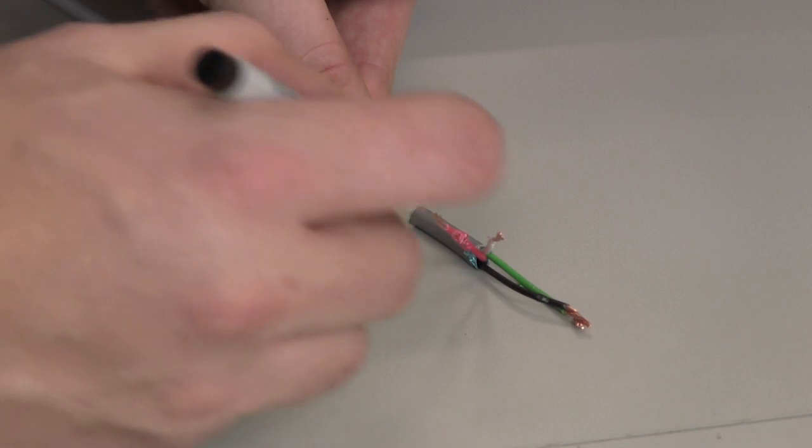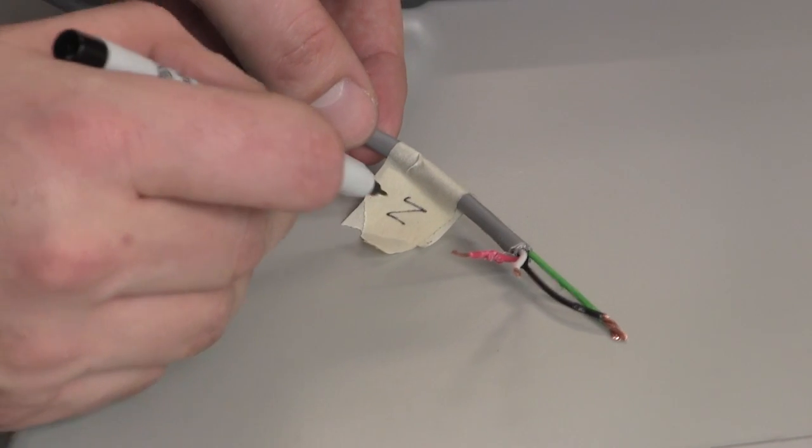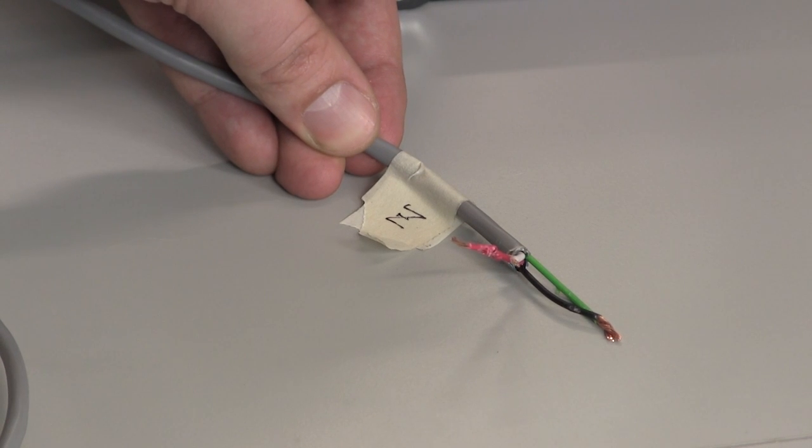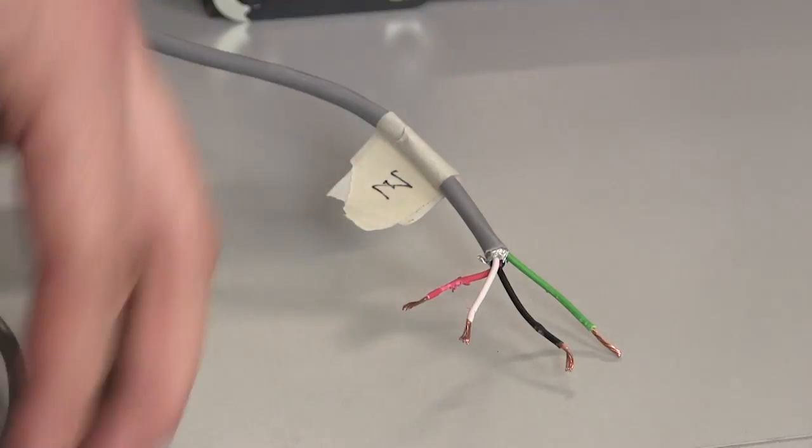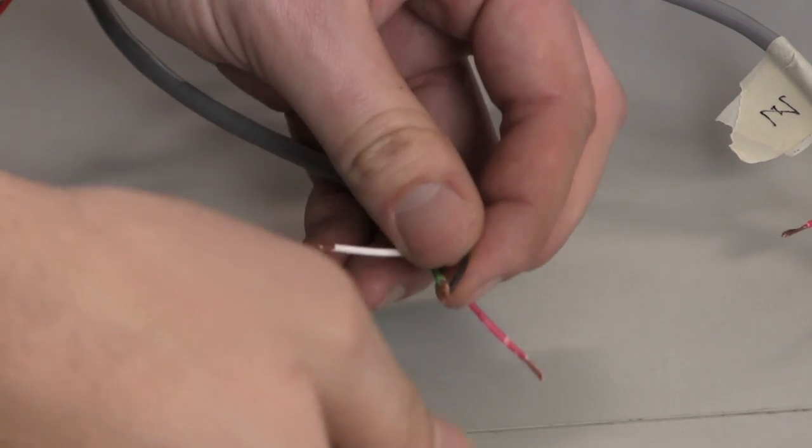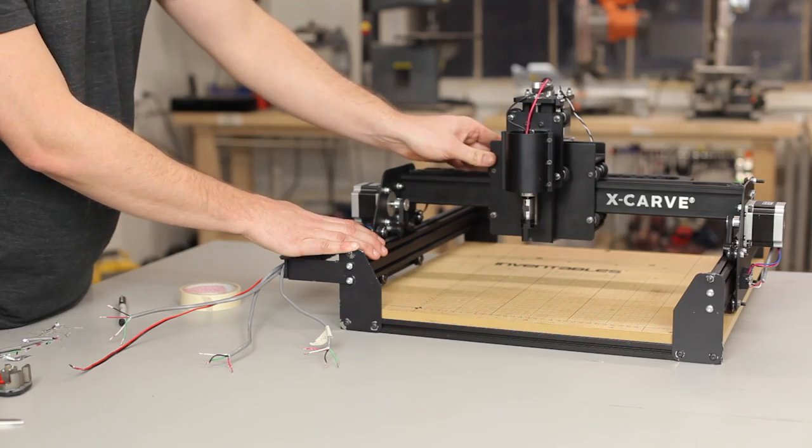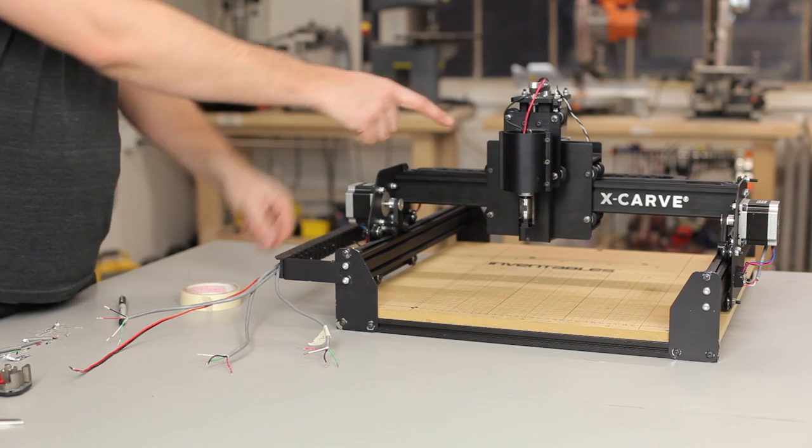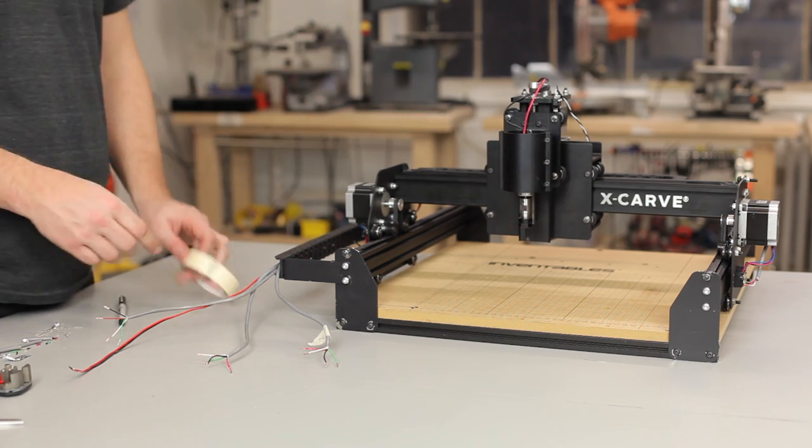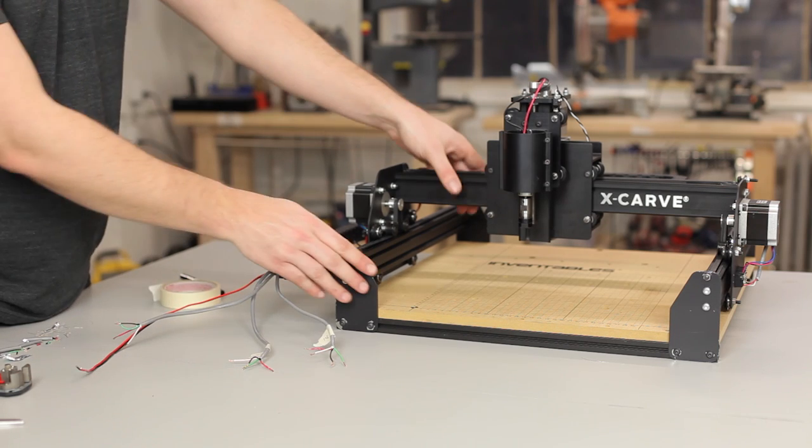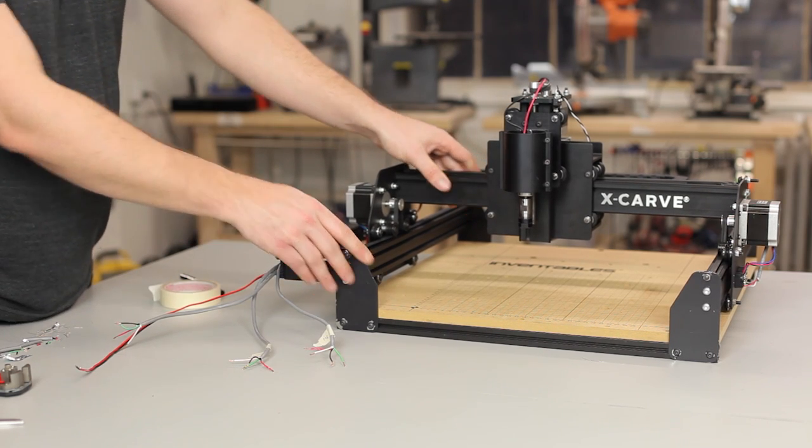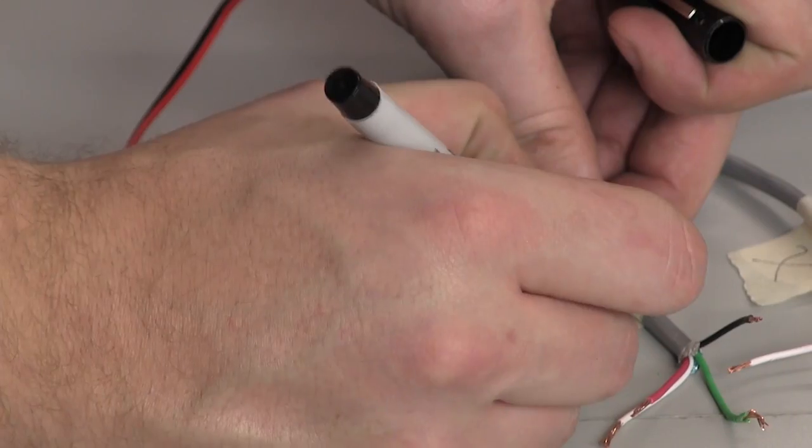That means that this stepper cable belongs to the Z motor. It's a good idea to label the stepper cable once you figure this out. Repeat this procedure with the other two lengths of stepper cable to figure out which motors they belong to. Only twist one pair of black and green wires at a time.